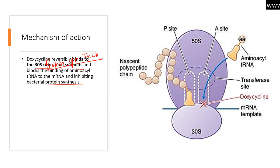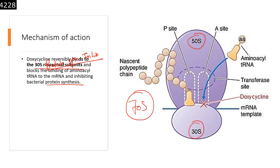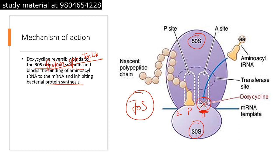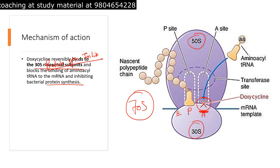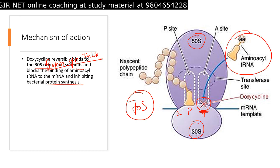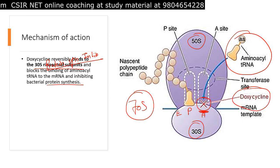Bacterial protein synthesis is very important for bacteria to survive and grow. Bacteria contain the 50S and 30S subunits of the ribosome, which together form the 70S ribosome, with mRNA in the middle. Doxycycline, as a tetracycline antibiotic, interacts with the 30S ribosomal subunit — specifically binding to the A site. The A site is where aminoacyl-tRNA normally enters. Doxycycline blocks this site, preventing aminoacyl-tRNA from interacting with the mRNA and the 30S subunit.